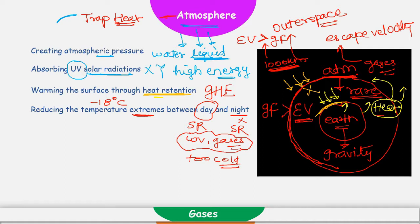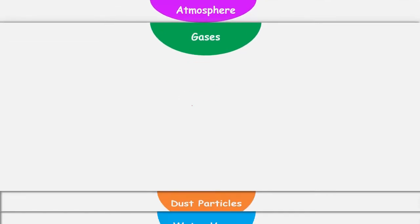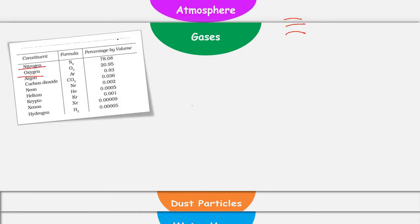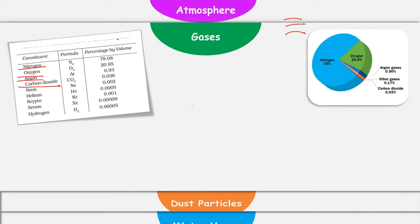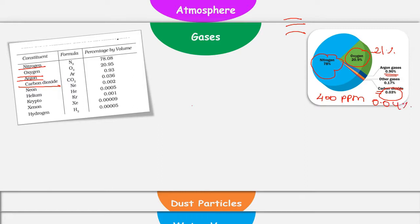Now let's talk about the different gases which are present in atmosphere. Atmosphere contains different types of gases at different layers. Major constituents are nitrogen, oxygen, argon, and carbon dioxide. If you look at this pie chart, you will find nitrogen is the most abundantly found gas in atmosphere. Second is oxygen which is 21%, then comes argon which is 0.93%, and then comes carbon dioxide which is 0.03%. The concentration of carbon dioxide has increased in past few decades and has now reached somewhere around 400 ppm or 0.04%.